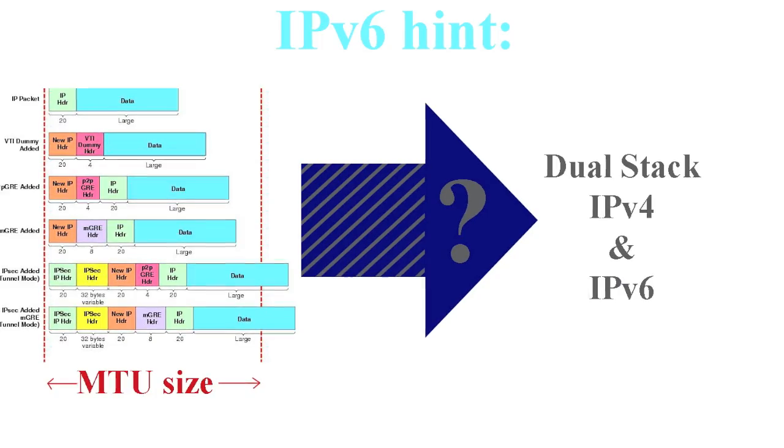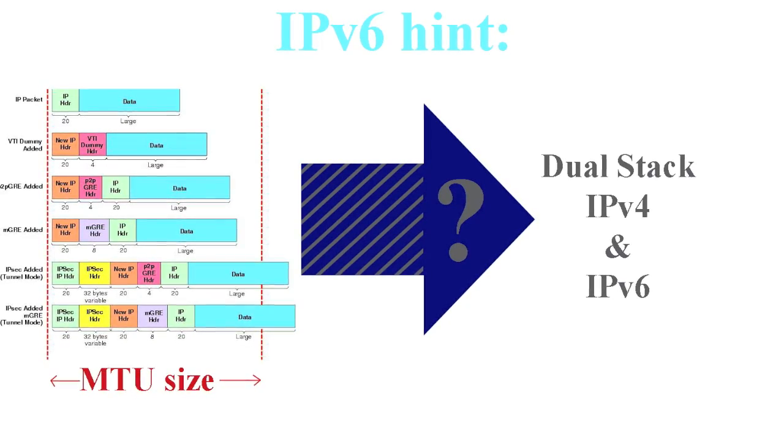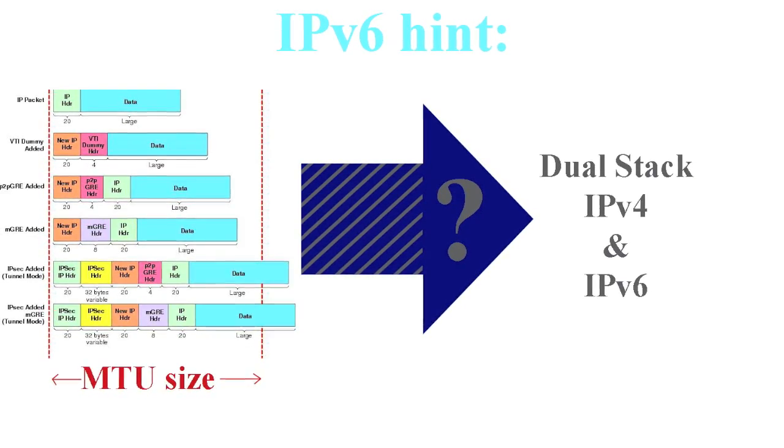This is IPv6 update number 39 brought to you by Hurricane Electric. A few months back, Jeff Huston with APNIC blogged about an IPv6 hint that had to do with the Maximum Transmission Unit, or MTU, and Dual Stacking. We'd like to share that hint with you.